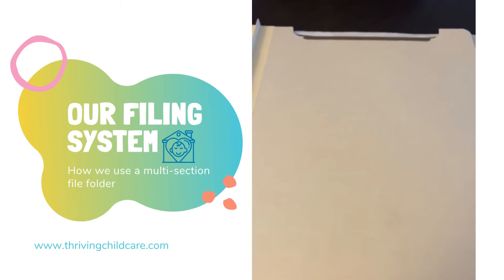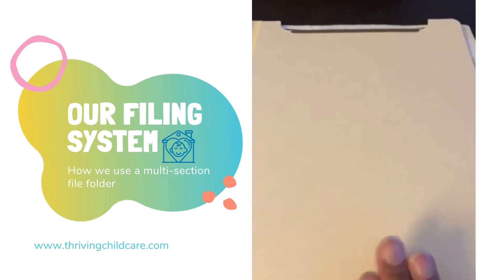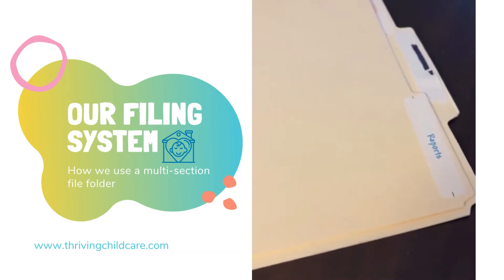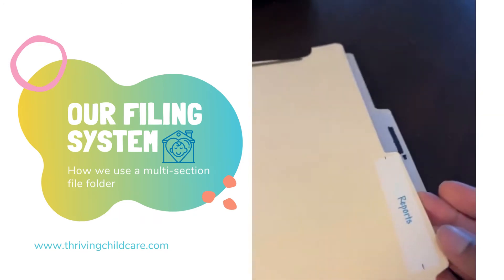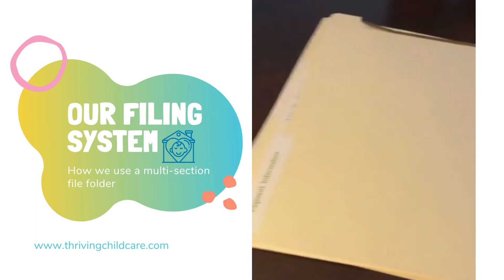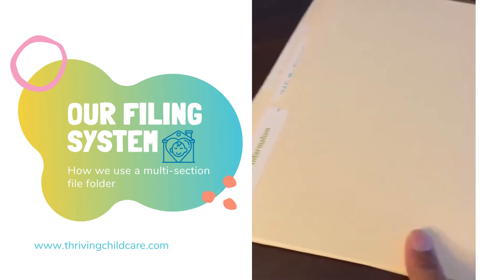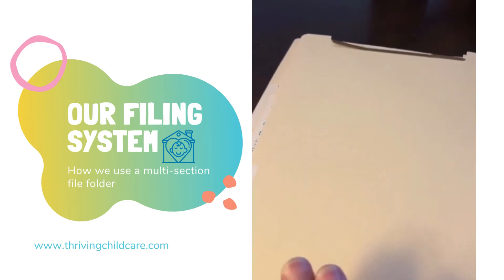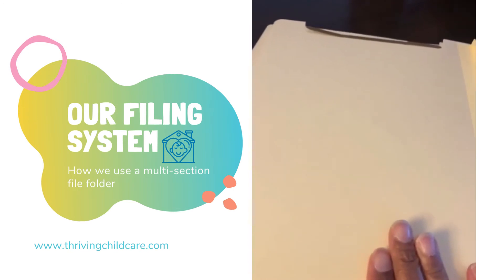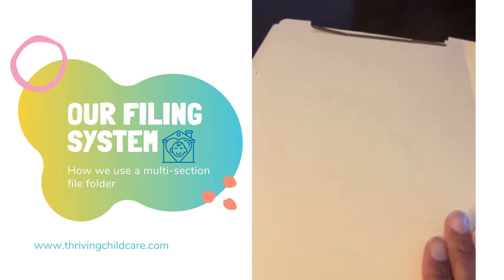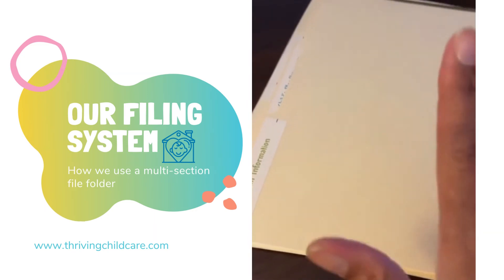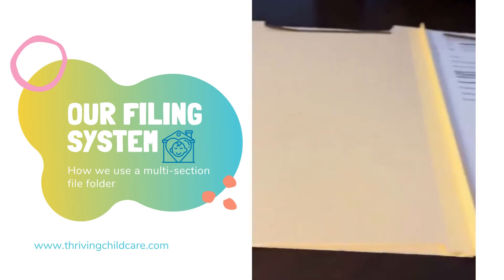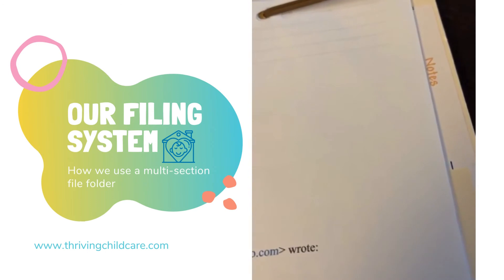The next section is labeled Reports. I don't have anything here currently — I was keeping copies of daily reports here, but we use an app for that so I don't print them out. You could use this section for something different. The following section is for Payments. Here you might find the payment agreement, or if there was an NSF or a returned check, I would keep that information or a note here, or if a parent wanted to change how they submitted their tuition payment.